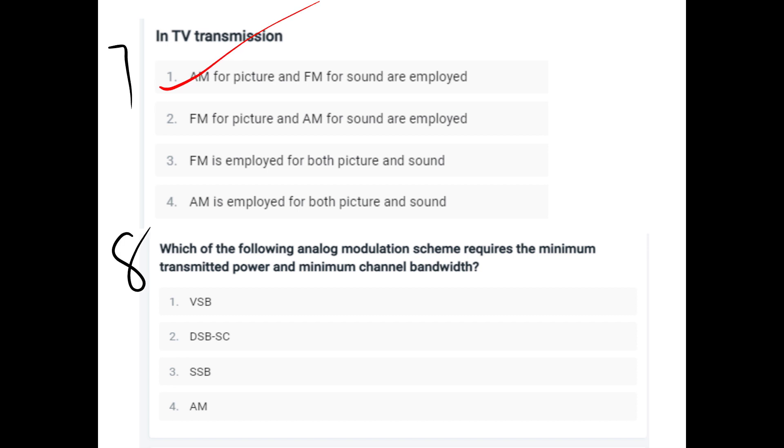Question seven: Which of the following analog modulation schemes requires minimum transmitted power and minimum channel bandwidth? USB, DSB, SC, SSB, AM. This option C is SSB.